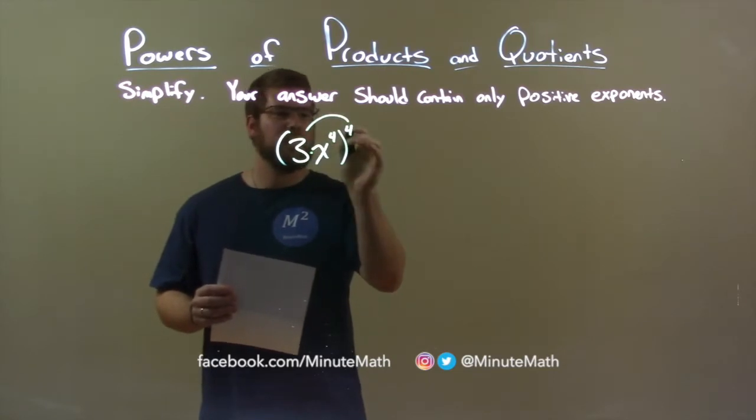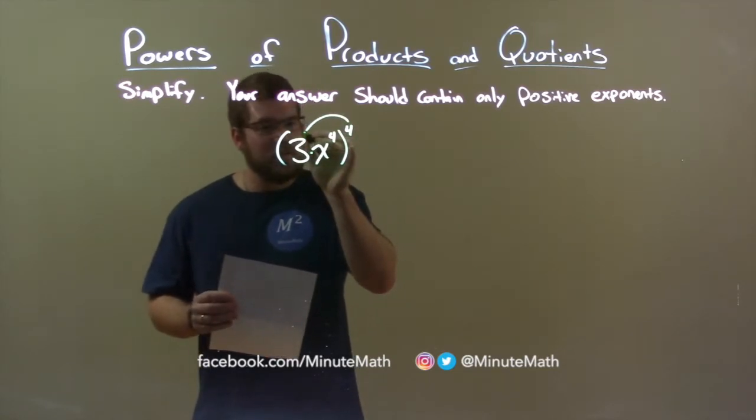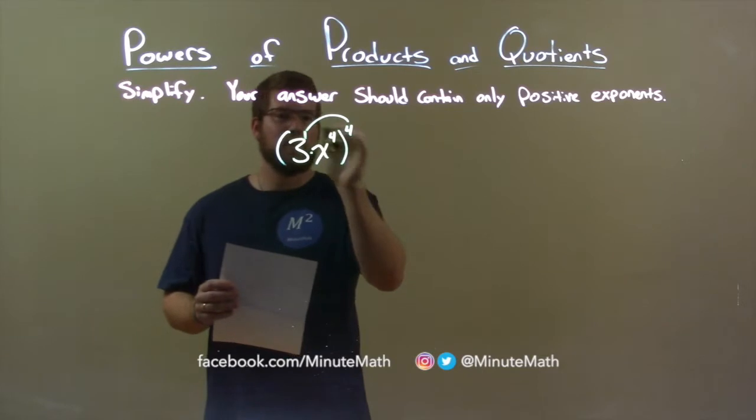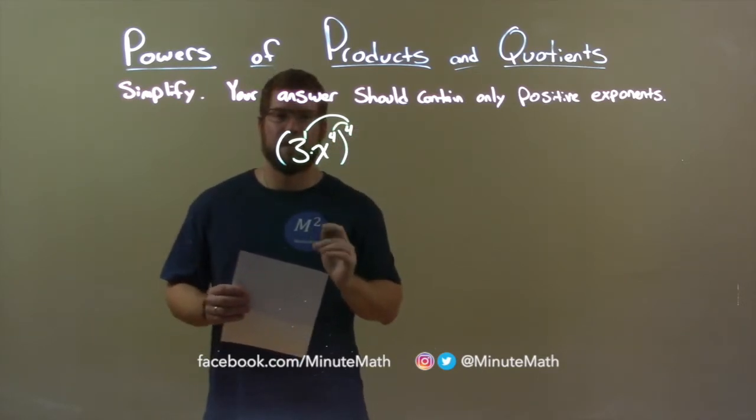So, the 4 gets to the 3, and remember that 3 is actually 3 to the 1st power. We distribute the 4 to both parts.